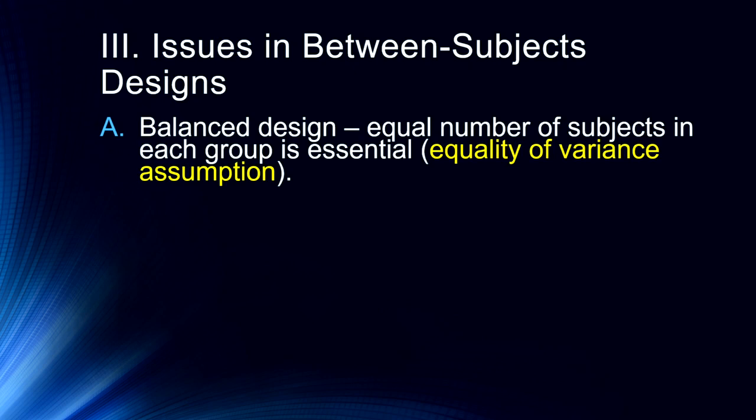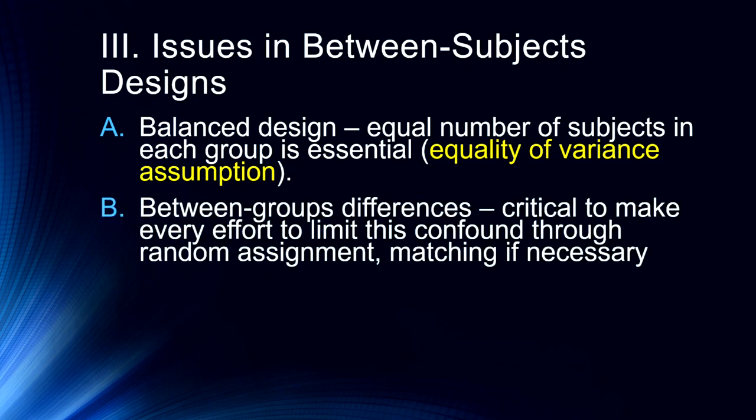So some issues we have with between subjects design. One of the most important of these is to try to have as balanced a design as possible. You want to have as close to an equal number of subjects in each group as possible. And this has to do with the equality of variance or homogeneity of variance assumption. Basically parametric statistics have an underlying assumption that the variance is going to be the same across your two groups. And so if you have a whole bunch more subjects in one group than another you are going to run into some difficulties.